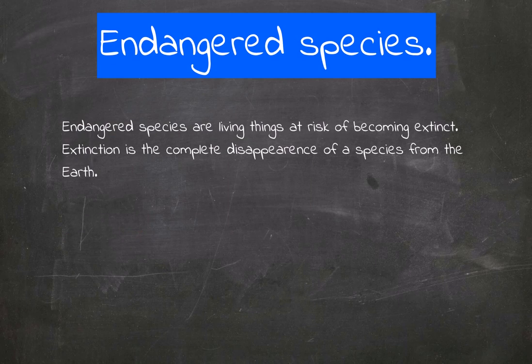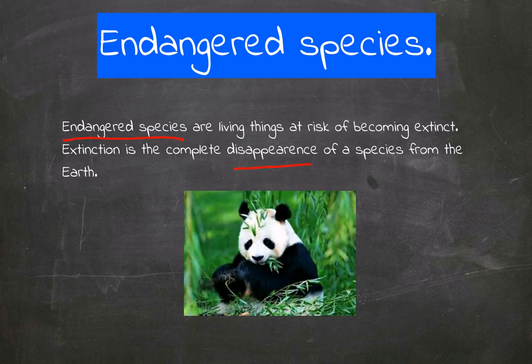The last negative effect is endangered species. Endangered species are living things at risk of becoming extinct. Extinction is the complete disappearance of a species from Earth. For example, the panda bear is one of the most endangered species in the world.